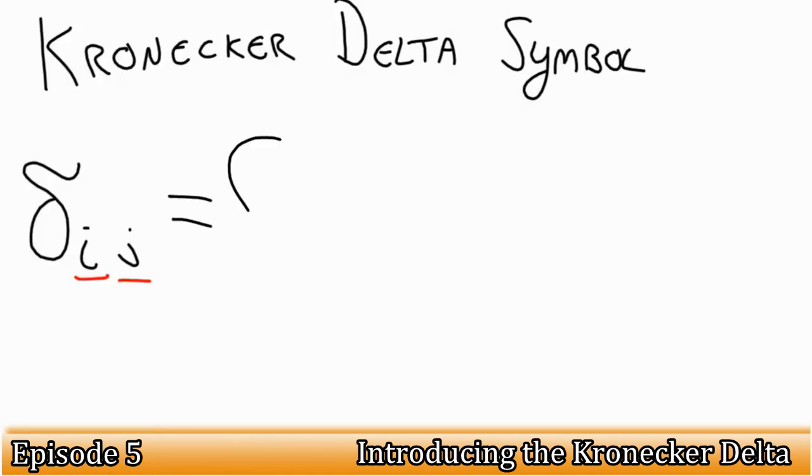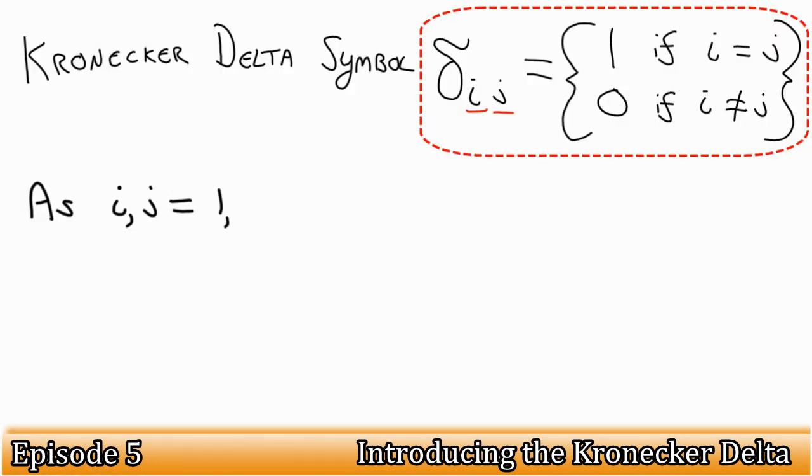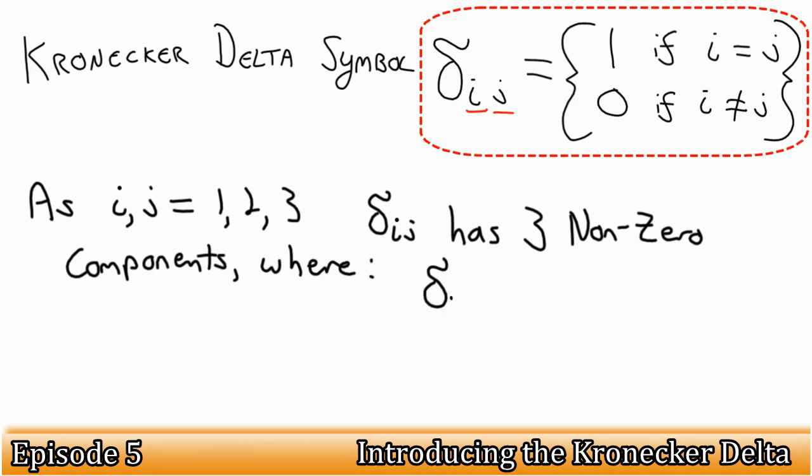So we know what it looks like now, but what makes it special? We define the Kronecker Delta symbol as follows: Delta IJ is equal to 1 if I is equal to J, and is equal to 0 if I is not equal to J. By our standard notation, where I and J are equal to 1, 2, or 3, we can see that the Kronecker Delta only has three components that are not equal to 0: Delta 1,1, Delta 2,2, and Delta 3,3 all equal to 1.